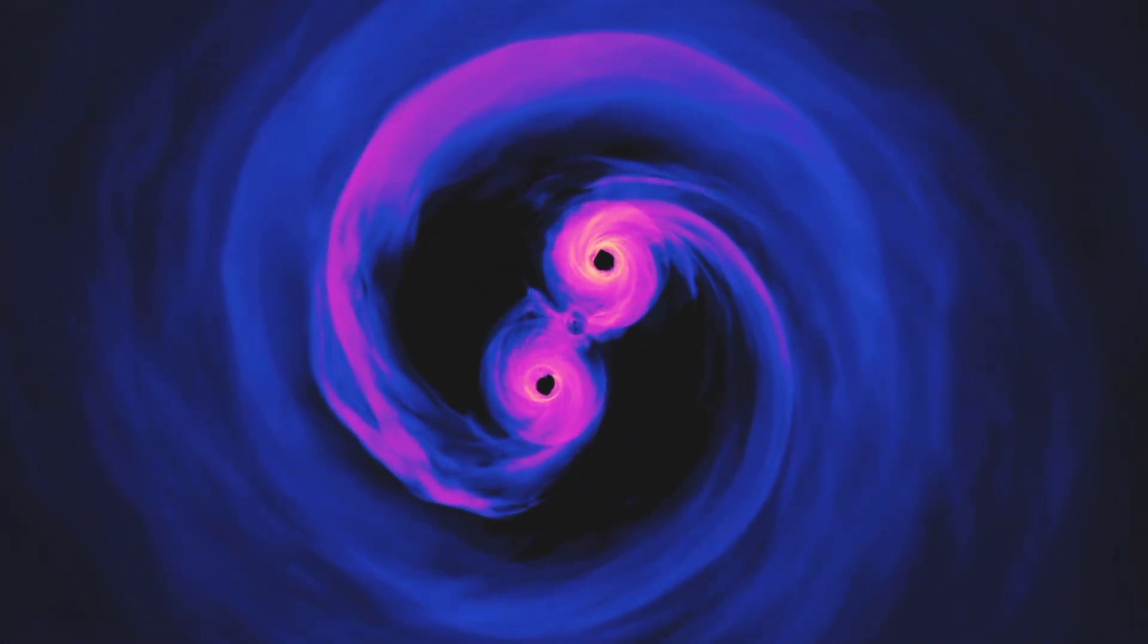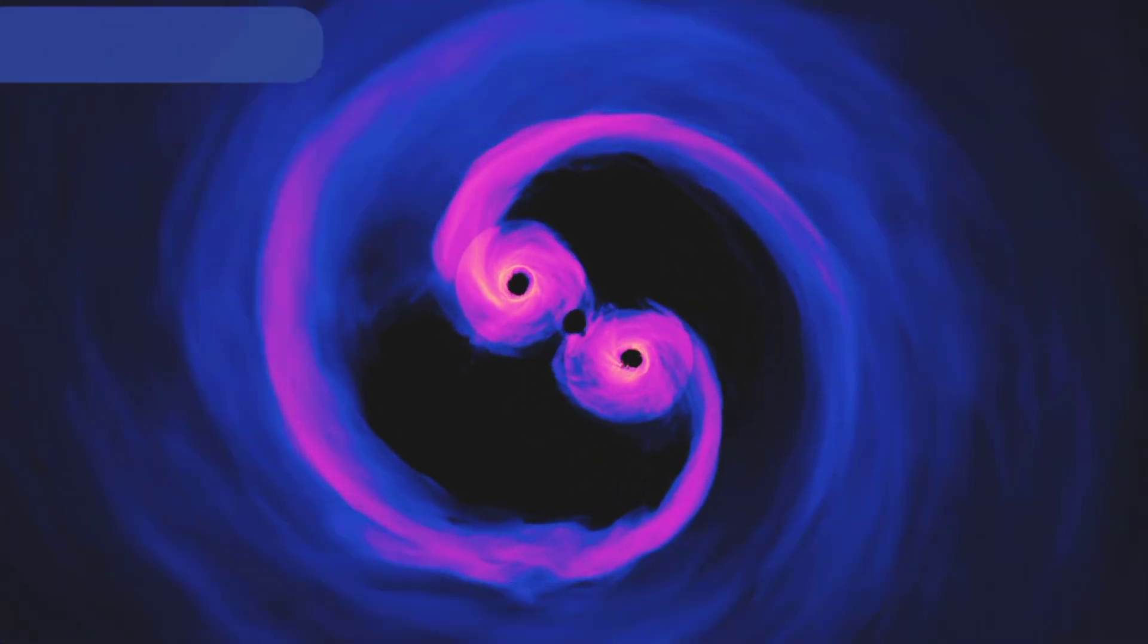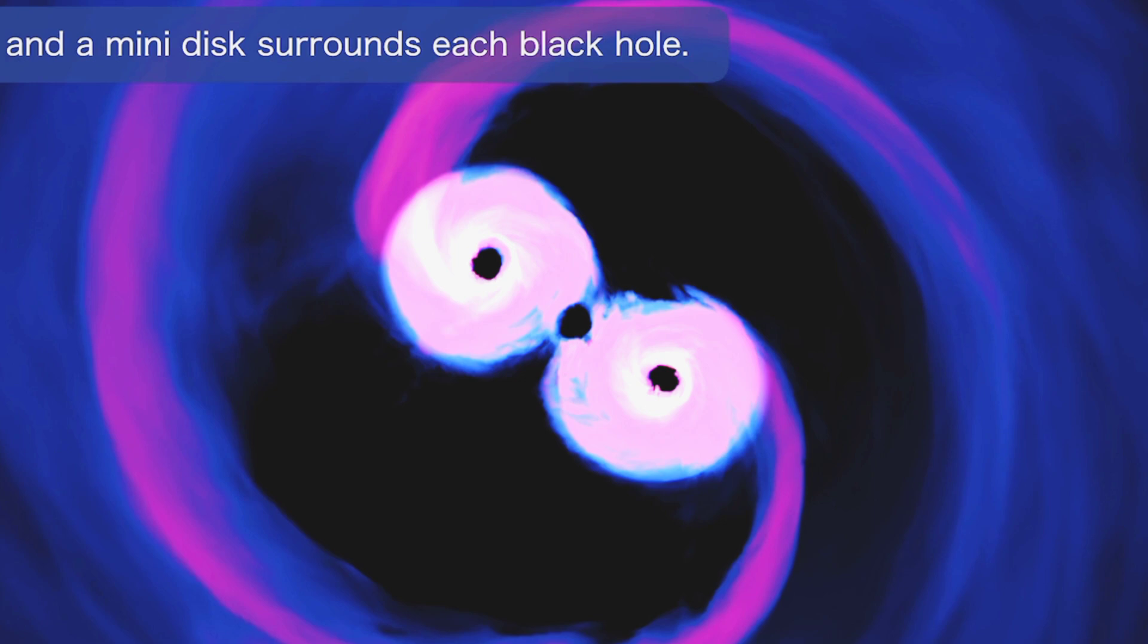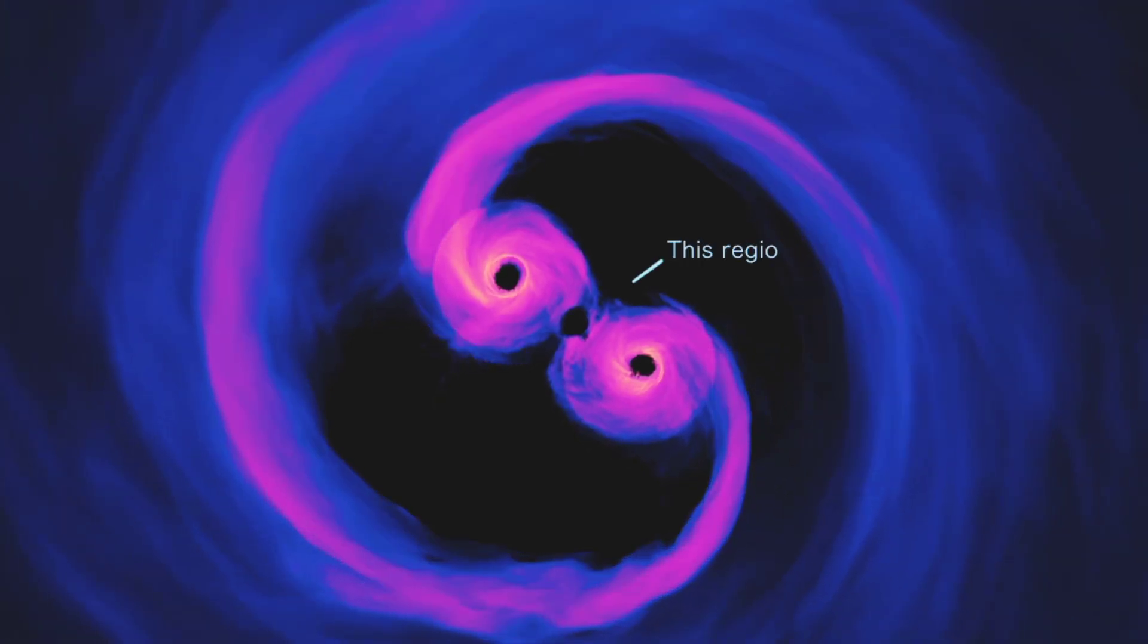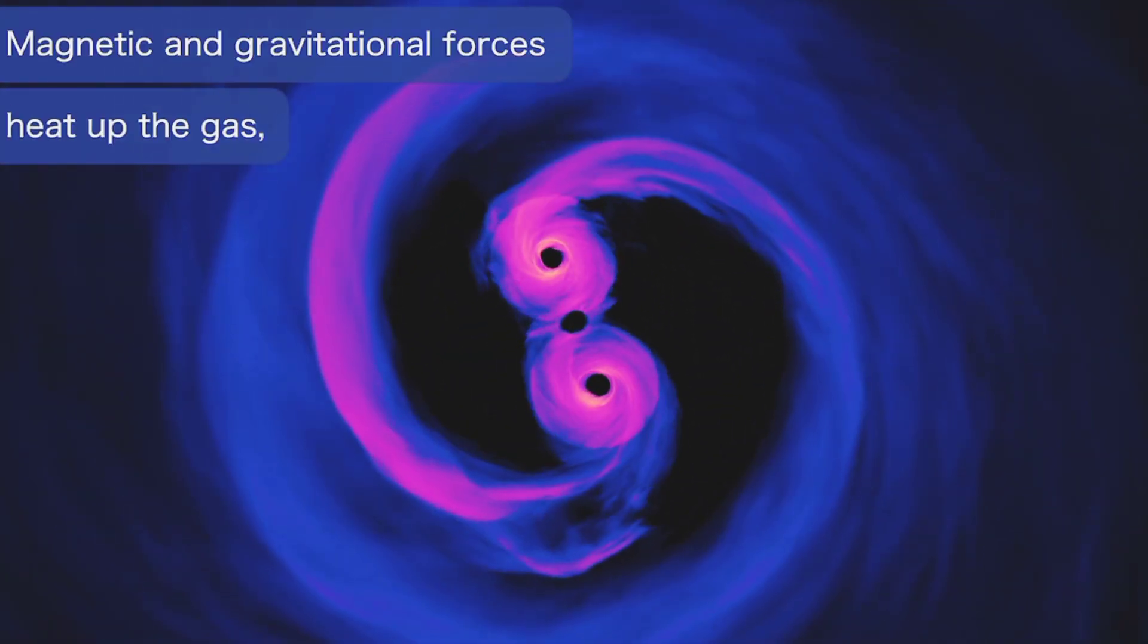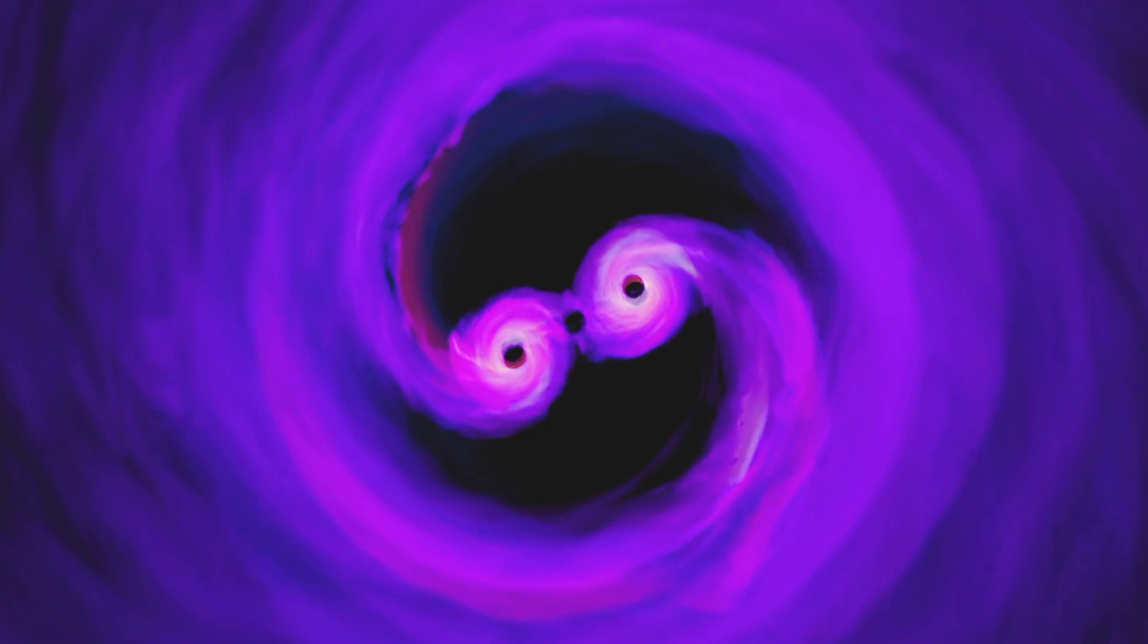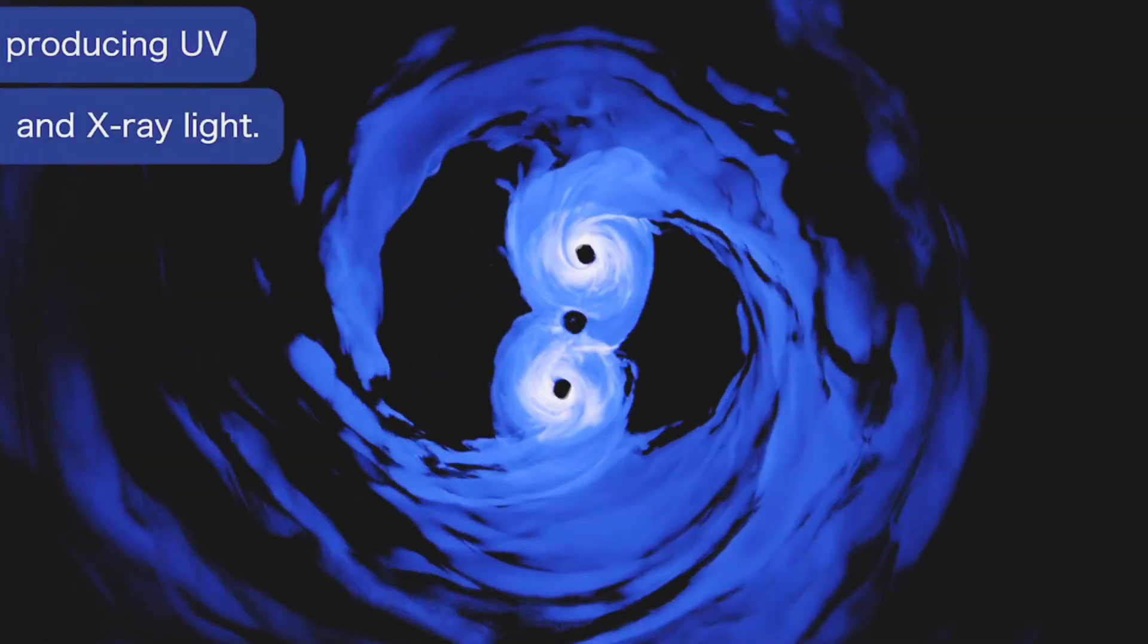For the first time, a new computer model powered by Einstein's general theory of relativity reveals the kind of light that these epic mergers give off. The simulation shows that the glowing gas around these black holes emits mostly ultraviolet, UV, and X-ray light, much like we see from active black holes in galaxies today.